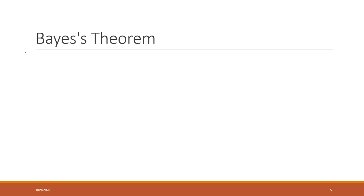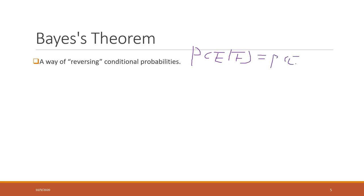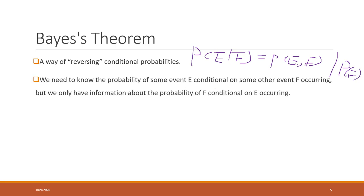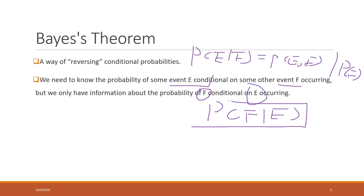Now we know the conditional probability theory. So what is Bayes' theorem? Bayes' theorem is a way that we reverse the conditional probability. The conditional probability is P(E|F) equals P(E and F) divided by P(F). So now we want to know the condition that event E given F, but we only know P(F|E). The question is: how can we calculate P(E|F) from that? That is the problem Bayes' theorem can resolve.